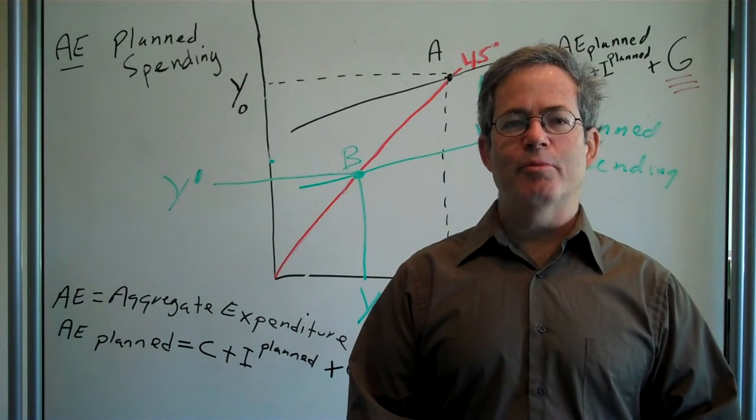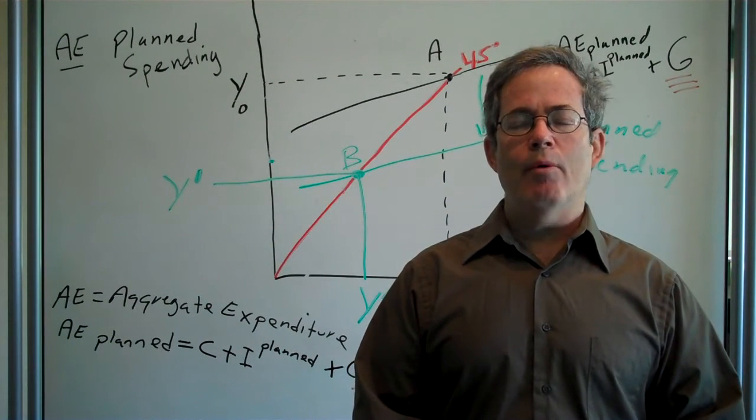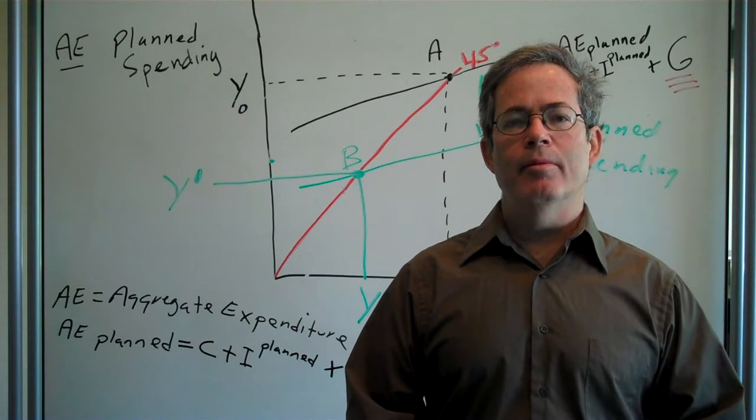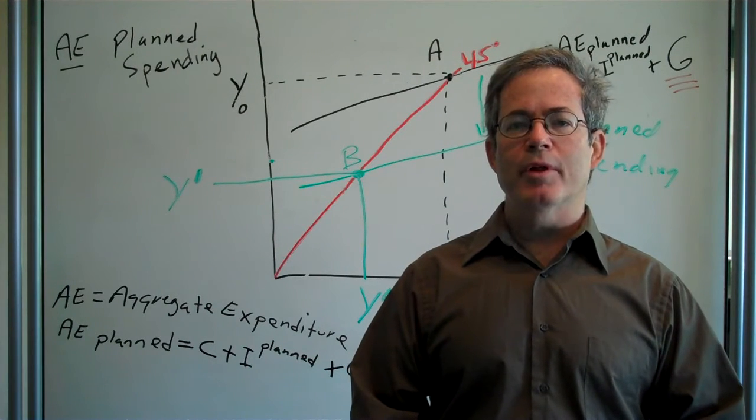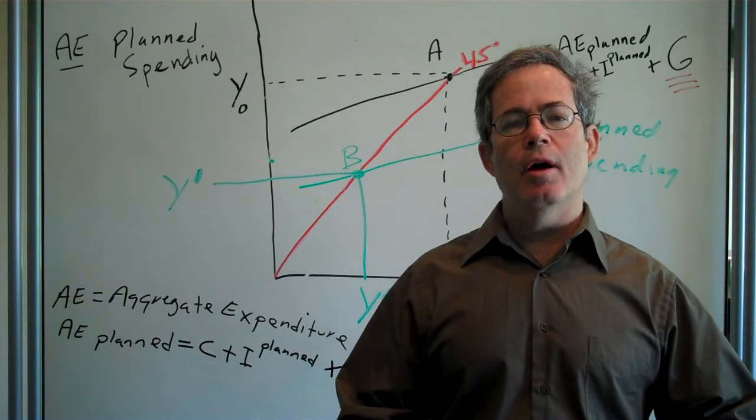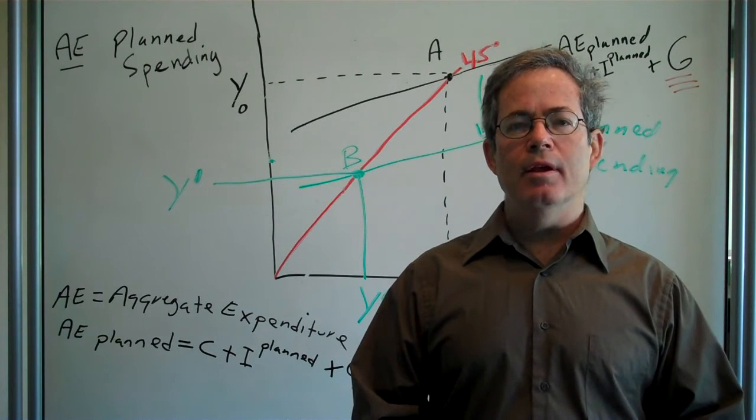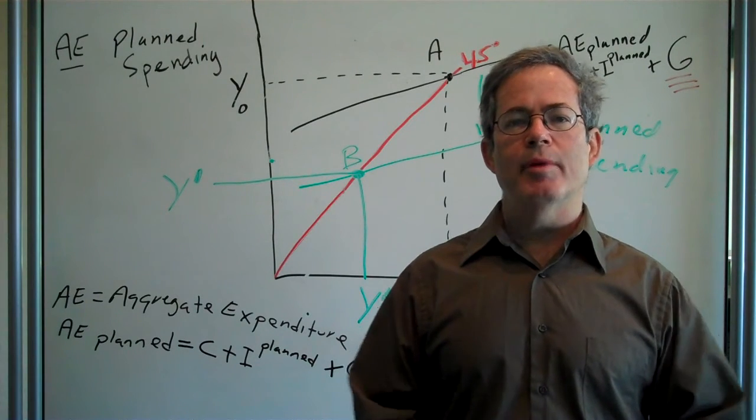So now we're going to use our income expenditure model to show how a recession affects income and output through the multiplier and then how the government can come in and spend money and help get the economy out of a recession.